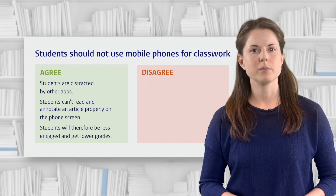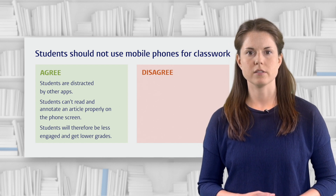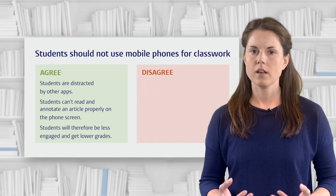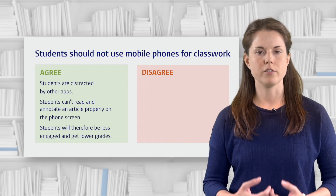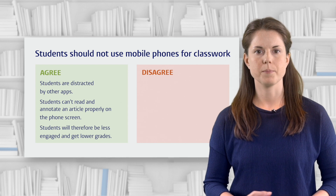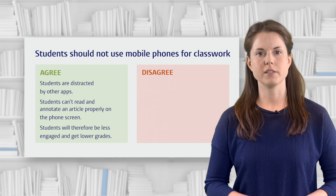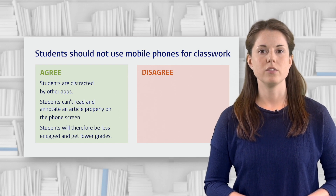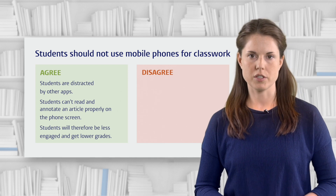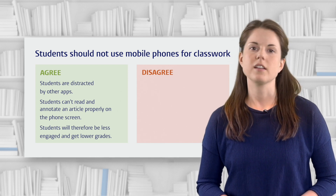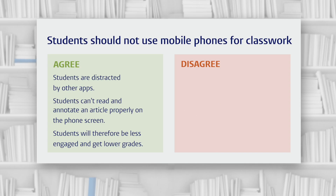But what could be a possible reason to disagree with this statement? In other words, can we come up with an argument for why mobile phones should be used for classwork? Well, perhaps we could point out the existence of class participation apps — apps that can be used in class for students to vote or answer questions in real time. These can actually improve student engagement, especially in large lectures. So this could be a counter-argument against the statement that students should not use mobile phones for classwork.